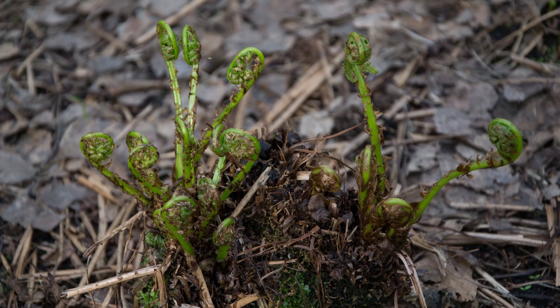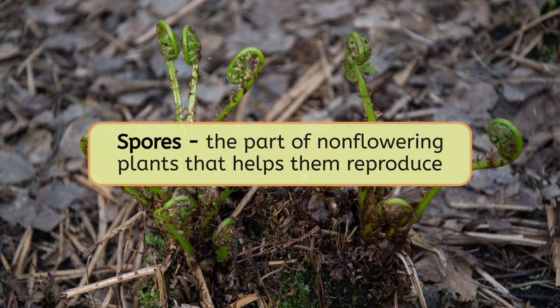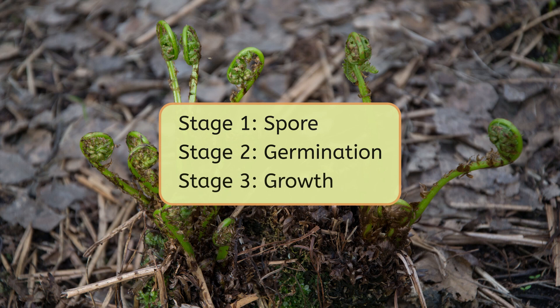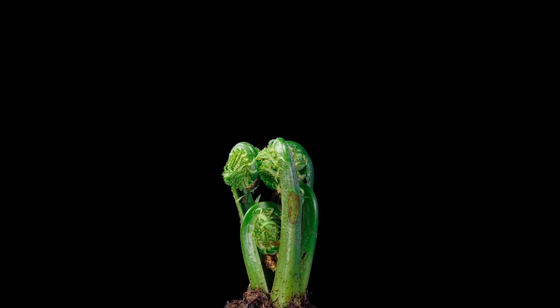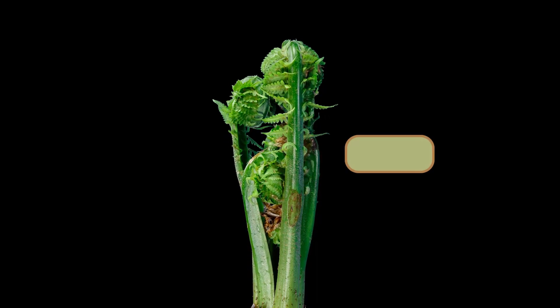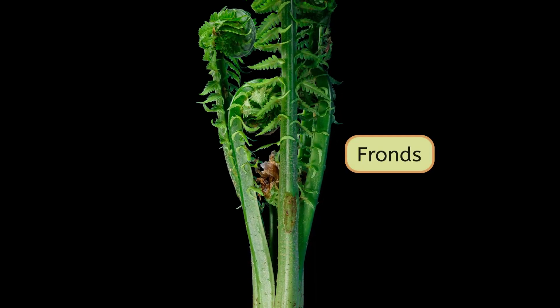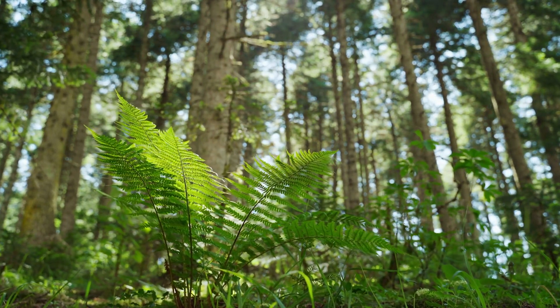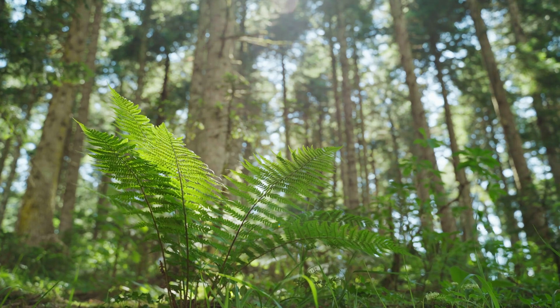A fern sprout is starting to form here. Spores must be like the seeds of non-flowering plants — the part that helps them reproduce. That means spores are the first stage of a non-flowering plant's life cycle. If it gets the right mixture of resources, it will germinate and then move onto the growth stage. Look how this fern sprout is unfurling. It has long feathery leaves called fronds. The fronds spread out to be long and wide as the plant grows. That must help them soak up sunlight in the shady forest.